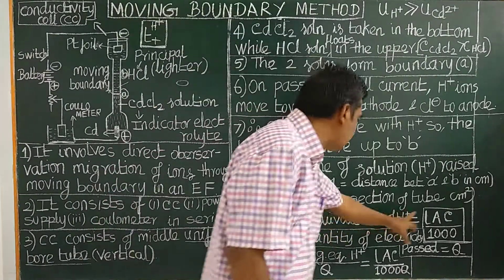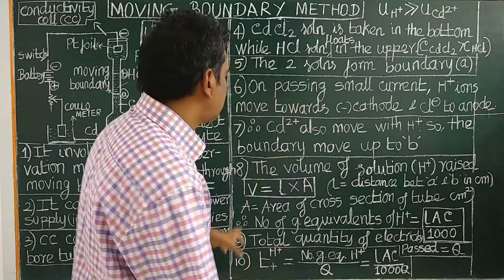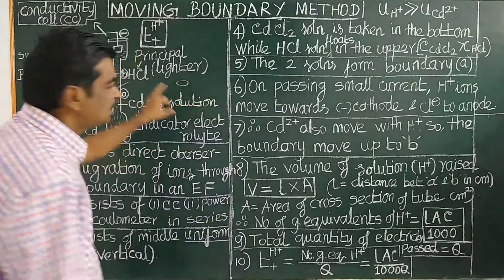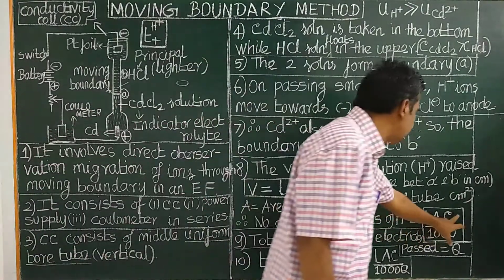The number of gram equivalents is calculated from the concentration of the HCl solution.